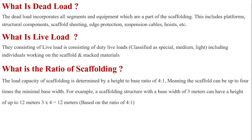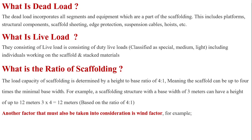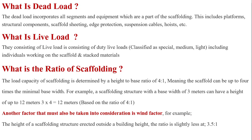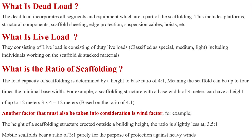If we have made 3 meters of base, then the height of our scaffolding will be 12 meters. If we have made 2 meters of base, the height will be 8 meters; 4 meters of base gives 16 meters height. For conditions where wind factors are greater, such as working outside where wind is more, we create a ratio of 3.5:1. The general ratio of mobile scaffolding is 3:1.